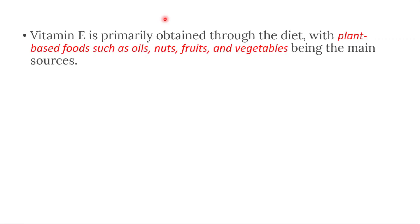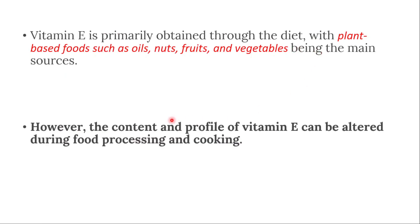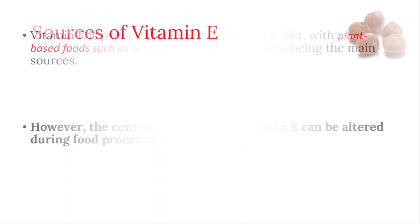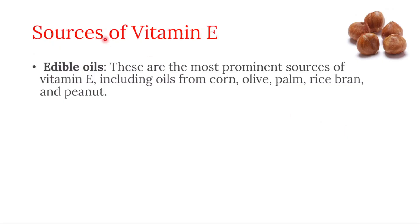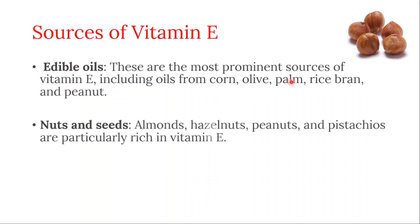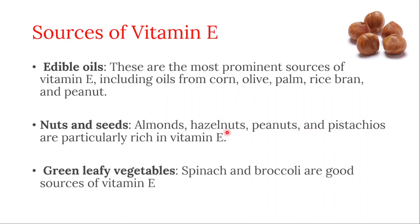Let's talk about food sources of vitamin E. Vitamin E is primarily obtained through the diet, with plant-based foods such as oils, nuts, fruits, and vegetables being the main sources. However, the content and profile of vitamin E can be altered during food processing and cooking. The most prominent sources are edible oils, including oils from corn, olive, palm, rice bran, and peanut. Nuts and seeds such as almonds, hazelnuts, peanuts, and pistachios are particularly rich.